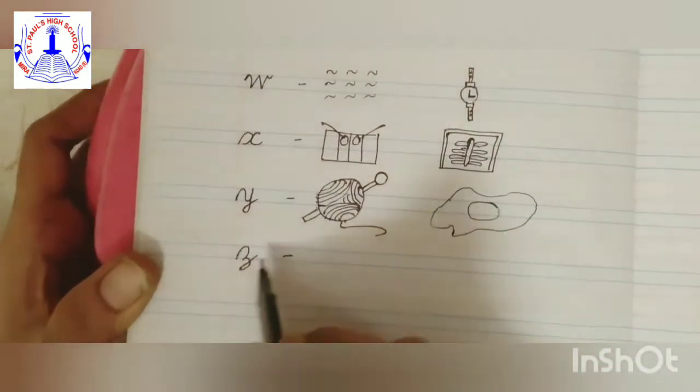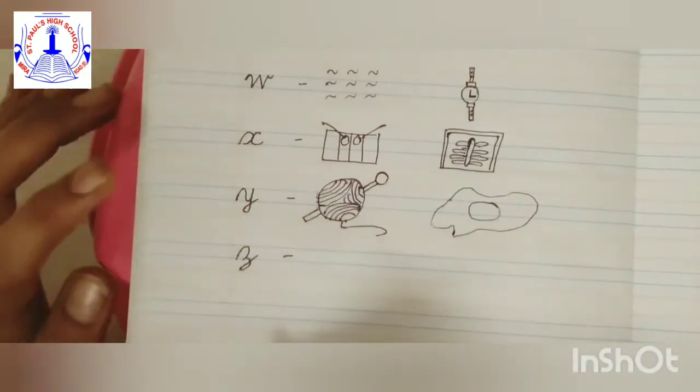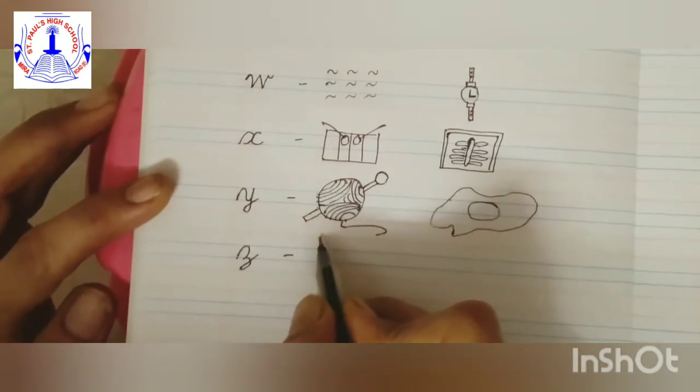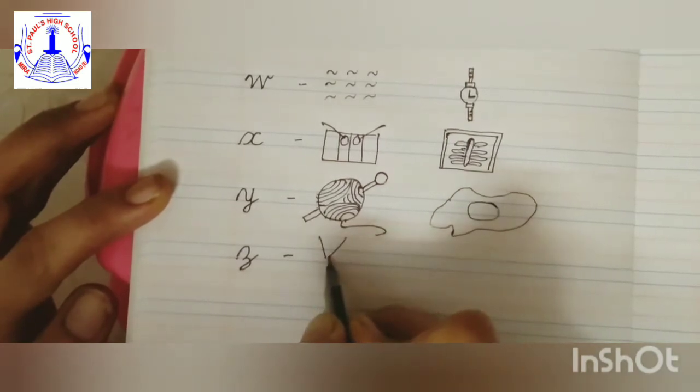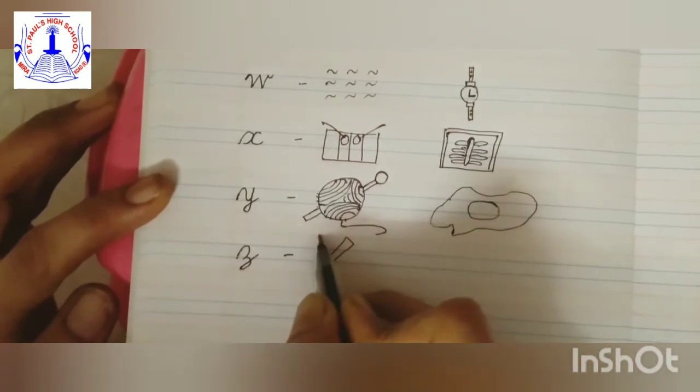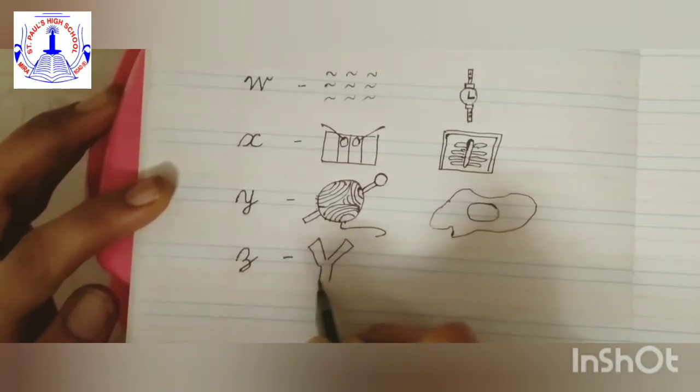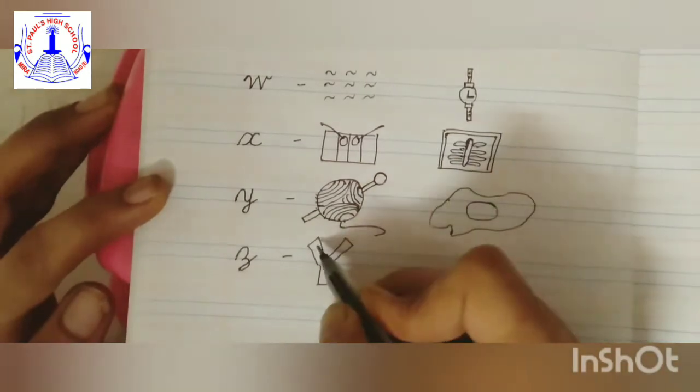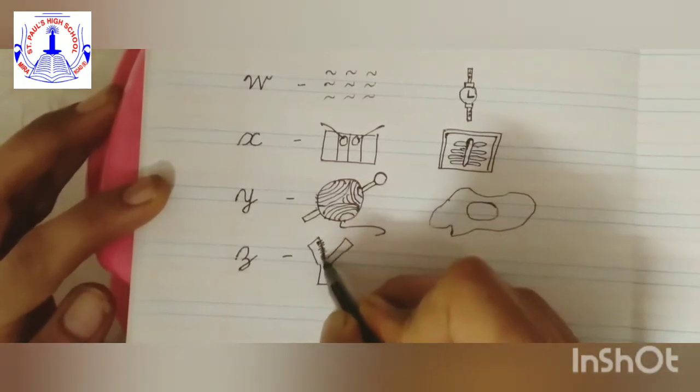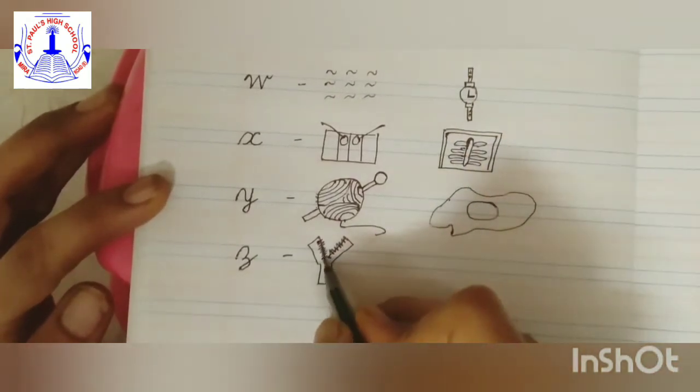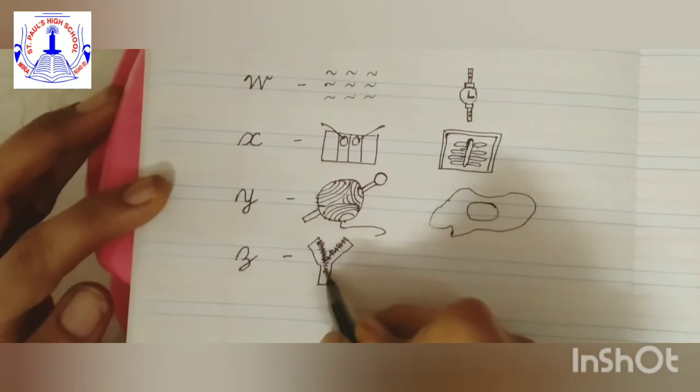Now cursive Z. Cursive Z we are going to make a zip. So first make a Y, like this. Now here do some zig zag, like this. Even in the middle also, this is zip.